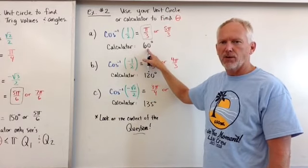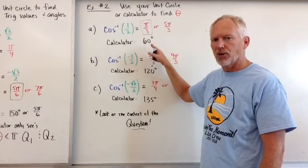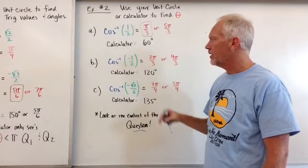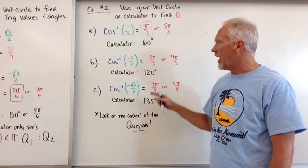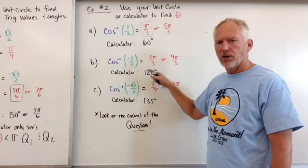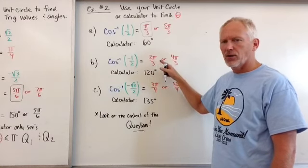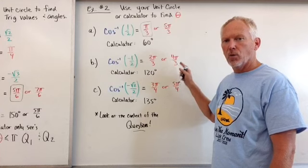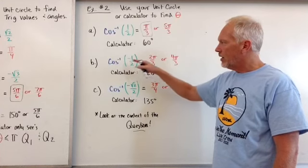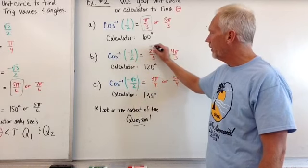And also my calculator told me it was at 60 degrees. Make sure your calculator is in degree mode if you want degrees value. Cosine inverse of negative 1 half. Well, the calculator is going to tell me that it's 120, but on my unit circle, I get 2 pi over 3, or I get 4 pi over 3. Which one of those is in the realm of 0 to pi? 2 pi over 3.